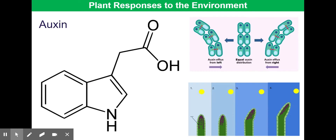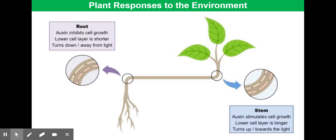The key hormone you need to be aware of with respect to these growth responses is auxin. Auxin is responsible for cell elongation in stems, but it is responsible for inhibiting cell growth in the roots. So a single hormone has two different effects in two different parts of the plant, and that's shown quite nicely here.